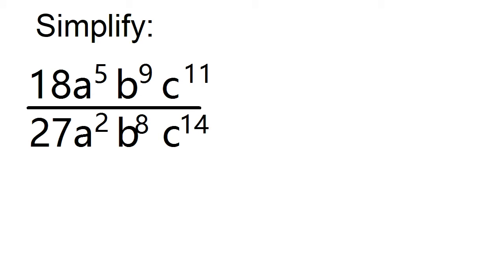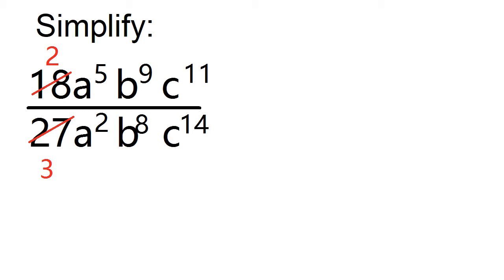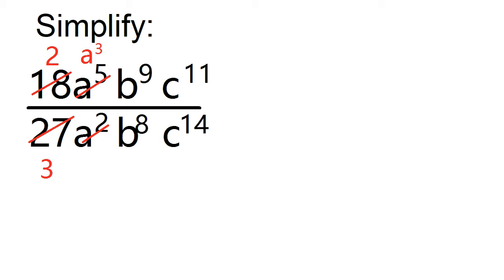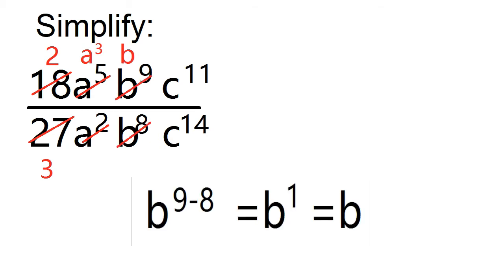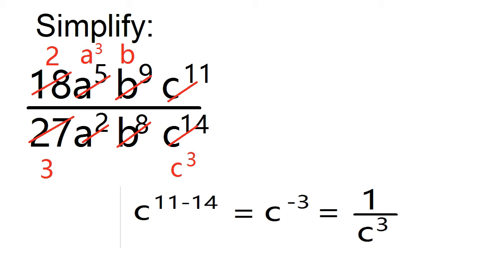Or you can simplify using the greatest common factor. The greatest common factor of 18 and 27 is 9. Divide out 9 and write 2 in the numerator and 3 in the denominator. The greatest common factor of a to the power of 5 and a squared is a squared. Divide out a squared and write a cubed in the numerator. The greatest common factor of b to the power of 9 and b to the power of 8 is b to the power of 8. Divide out and write b in the numerator. The greatest common factor of c to the power of 11 and c to the power of 14 is c to the power of 11. Divide out c to the power of 11 and write c to the power of 3 in the denominator.